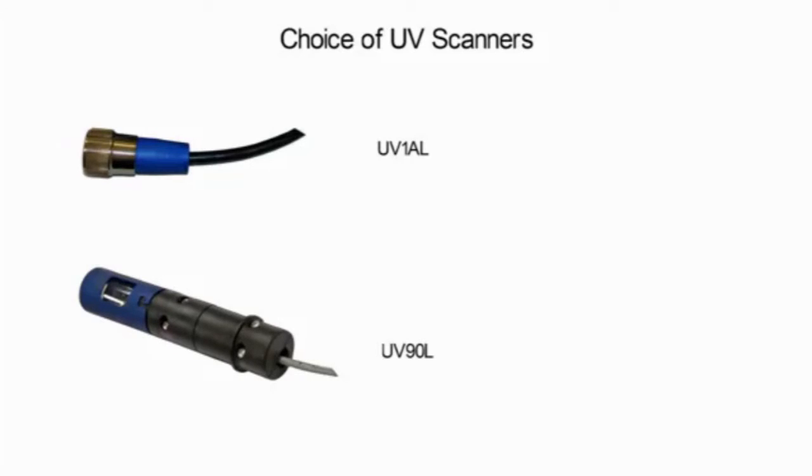The UV-90L provides a field wireable terminal block. The UV-1AL and UV-90L ultraviolet flame scanners are non-self-checking and should be applied only to burners that cycle a minimum of once per 24 hours.